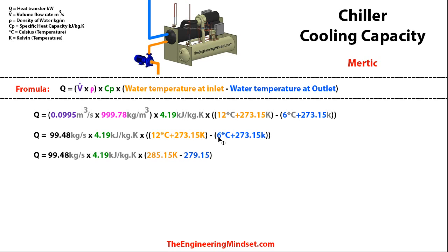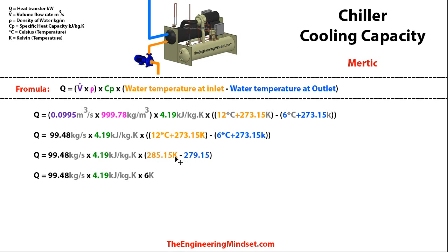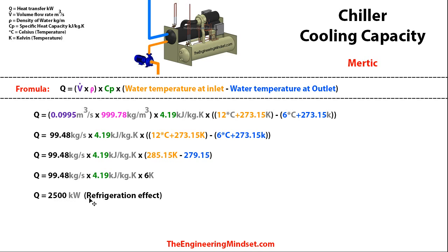Since the specific heat capacity uses per Kelvin, we convert Celsius to Kelvin by adding 273.15. So 12°C becomes 285.15 K, and 6°C becomes 279.15 K. Subtracting these gives a difference of 6 Kelvin. Multiplying all three figures together gives us 2,500 kilowatts. So this chiller, given these operating conditions, is producing 2,500 kilowatts of refrigeration.